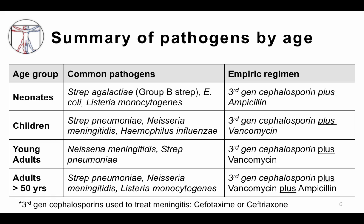This table summarizes for neonates what the common pathogens are and what an empiric regimen should look like. For neonates, we worry about group B strep (Streptococcus agalactiae), E. coli, and Listeria monocytogenes. A third generation cephalosporin covers E. coli and group B strep, while ampicillin is added for Listeria monocytogenes, although ampicillin is also active against group B strep.